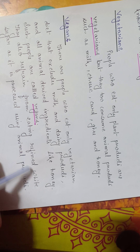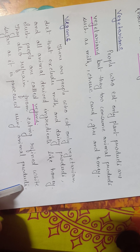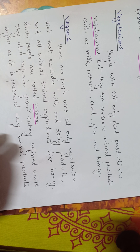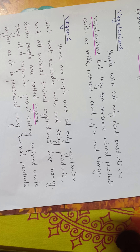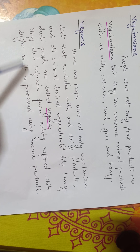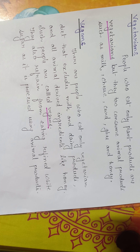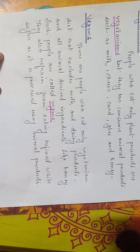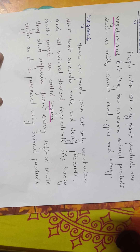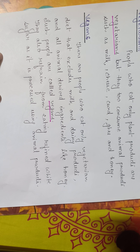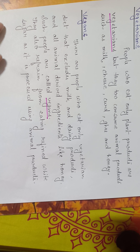Vegans also refrain from eating refined white sugar as it is processed using animal products. Vegans are strictly vegetarian and do not eat milk or dairy products. The reason they avoid white sugar is that the icing of sugar used on cakes contains dried egg white. That is why they refrain from, meaning they avoid, using white sugar.